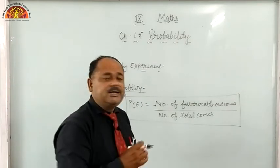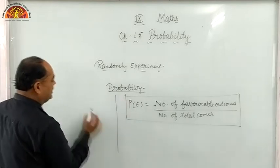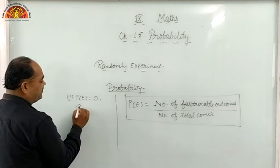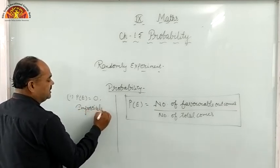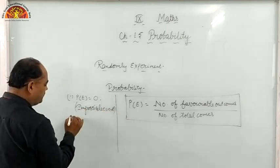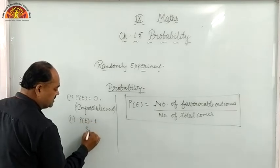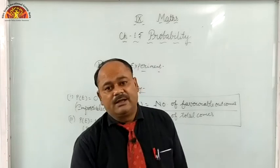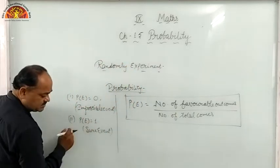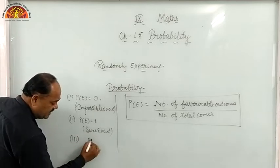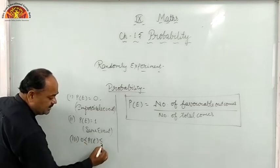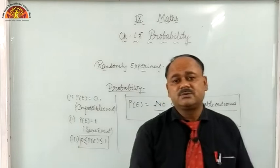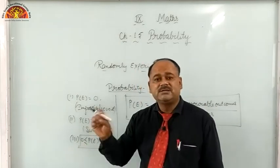Until we remember this formula, we cannot solve questions of probability. To find probability, remember some key concepts: if the probability of any event is zero, that event is called an impossible event. If the probability value is one, it is called a sure event. In MCQ questions, if probability of an event is zero, the answer is impossible event. The range of any probability is greater than or equal to zero and less than or equal to one.